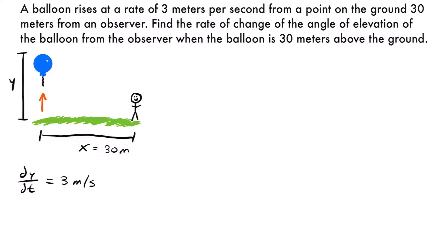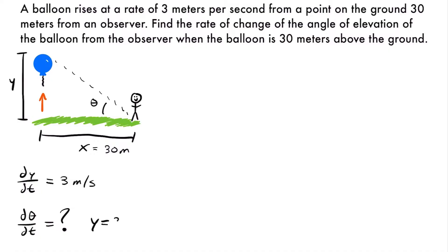The angle is going to be from the observer to the balloon. If we draw an imaginary line from the balloon to the observer, it creates this angle here, which I'll label theta — the angle of elevation from the observer to the balloon. As the balloon rises, that angle gets larger and larger. So dθ/dt is what we are looking for and do not know. We also know we want to find that rate when the balloon is 30 meters above the ground, so we're looking at the specific moment when y equals 30 meters.